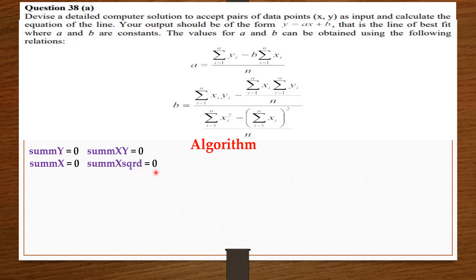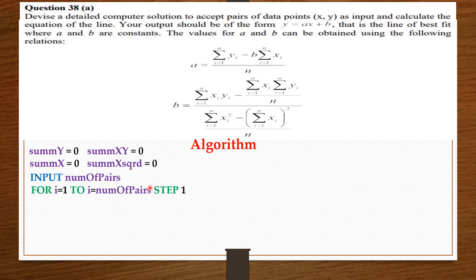From the question, we are to accept pairs of data points from the user as inputs. Since the x and y values will vary for each input, we want to know from the user how many pairs of data points will be entered. So we say: input number of pairs. From here, we set a for loop — for i equals 1 to i equals number of pairs, step 1. That is, run this for loop from 1 to the total number of pairs the user wants to enter.